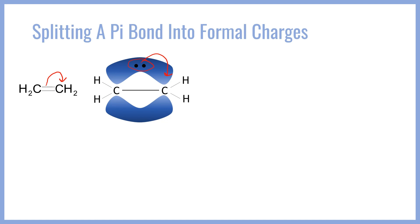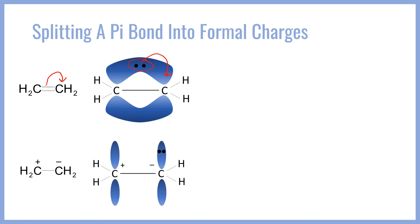What will that look like in terms of the structural diagram? It'll result in something where the left carbon and right carbon are now formally charged because they either have a deficiency or an excess of electrons. The left carbon, which lost the pi bond completely, is now deficient in electrons and positively charged. The carbon on the right, having picked up both electrons from the pi bond, is now negatively charged. From an orbital perspective, the pi bond has broken into its constituent p orbitals; the electrons now firmly reside in the p orbital on the right, giving it a formal negative charge, whereas the p orbital on the left is completely empty, giving that carbon a formal positive charge.